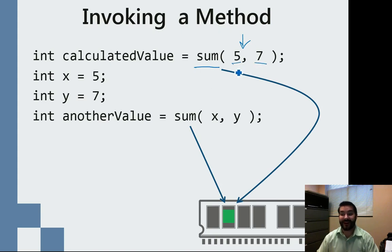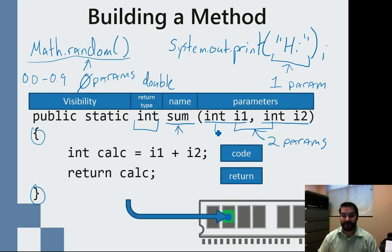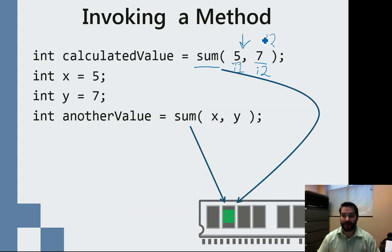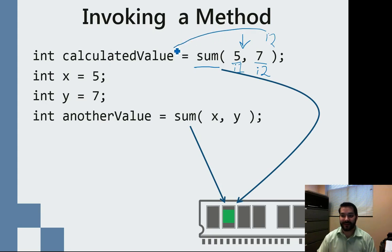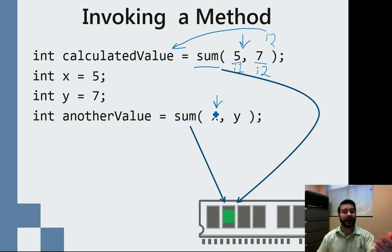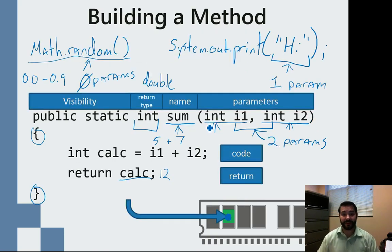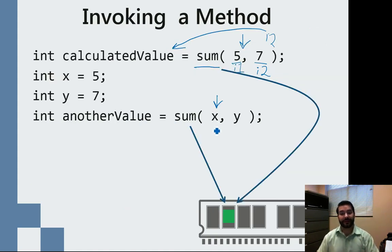So this 5 and this 7 — 5 is going to be i1, and 7 is going to be i2. Those go into the method: that's a 5 now, that's a 7 now. So 5 plus 7 — return that value. That calculated result is going to be 12, so that 12 comes back up here. This is 12 now. Left-to-right association means I calculate all of this stuff first, then it gets assigned to the calculated value. I can use variables — I don't have to use literals like 5 and 7. I don't care what it's called outside of my method; it's called x here, not there.